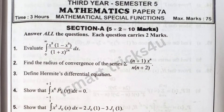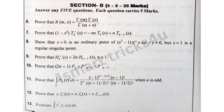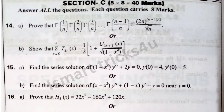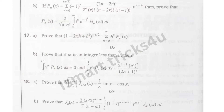Now the model papers will be covered. 1st model paper: Section A — very short, 2 marks each. Next, Section B — 5 marks short answer questions. Next, Section C — long answers, 8 marks questions.